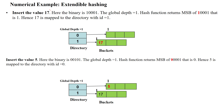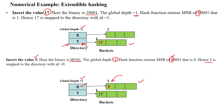Now we insert the first value 17. The binary string for 17 is 10001. With global depth 1, we take the most significant bit, which is 1. So the directory index is 1, pointing to the memory bucket associated with index 1, and we store 17 there. Next we insert 5, which has binary string 00101. With global depth 1, the most significant bit is 0, so we store 5 in the memory bucket pointed to by index 0.